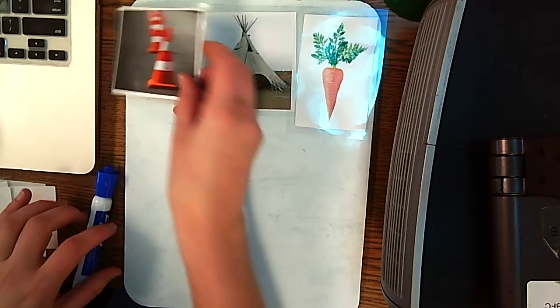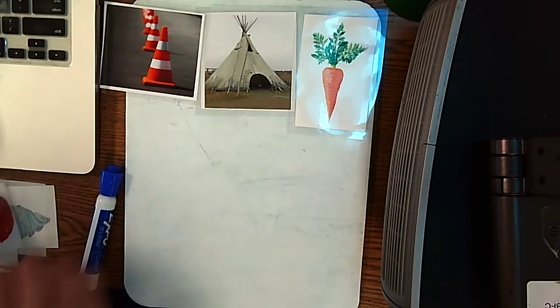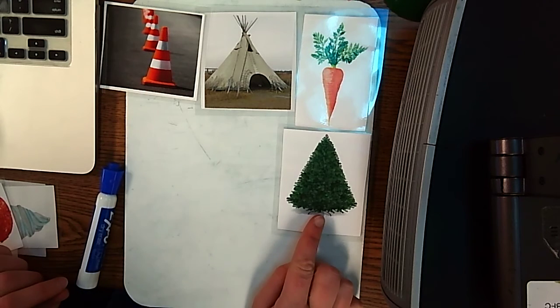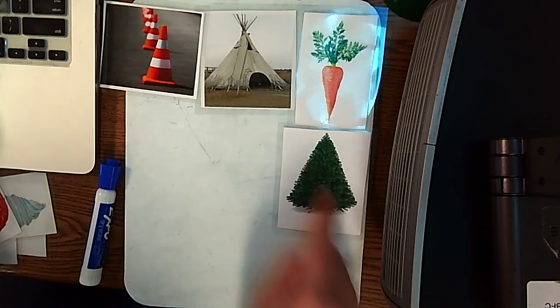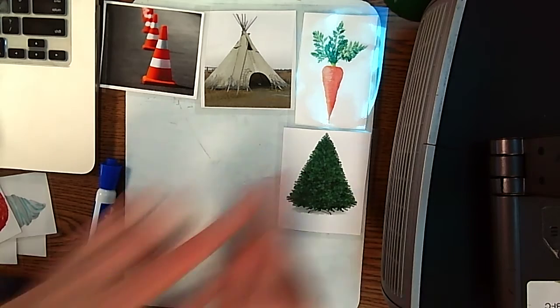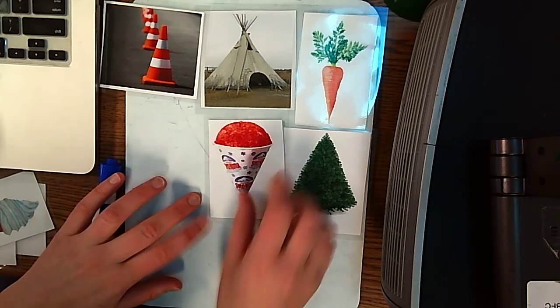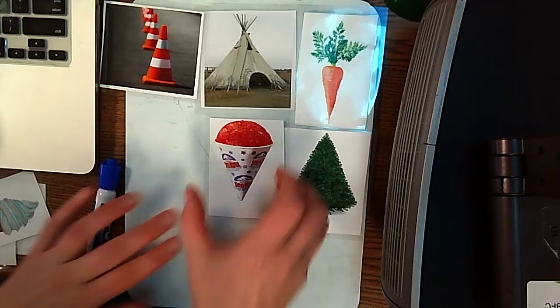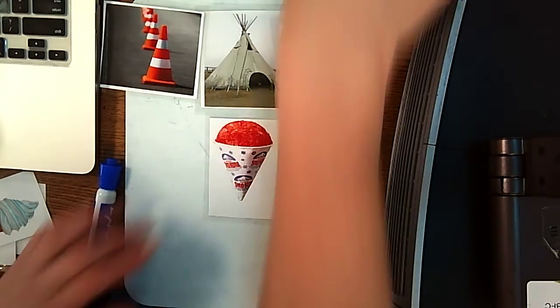Traffic cones. We've seen these around town. Christmas trees. They've got the circle bottom and the point at the top. We've got a snow cone. You can hold it. Eat your delicious treat in the summertime.